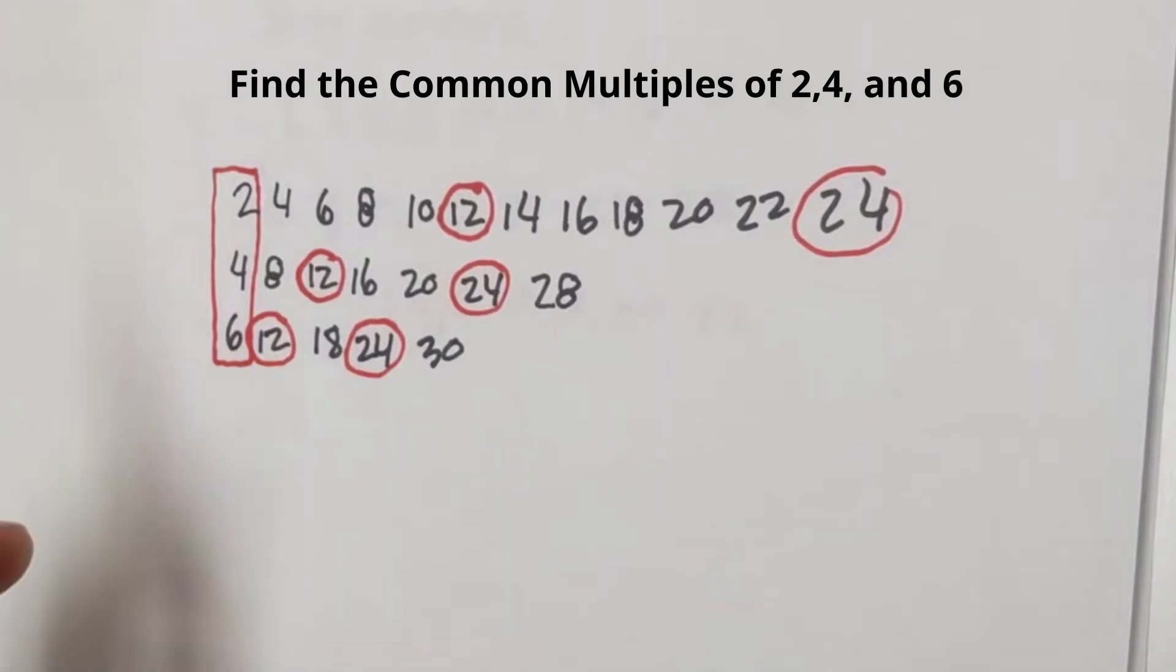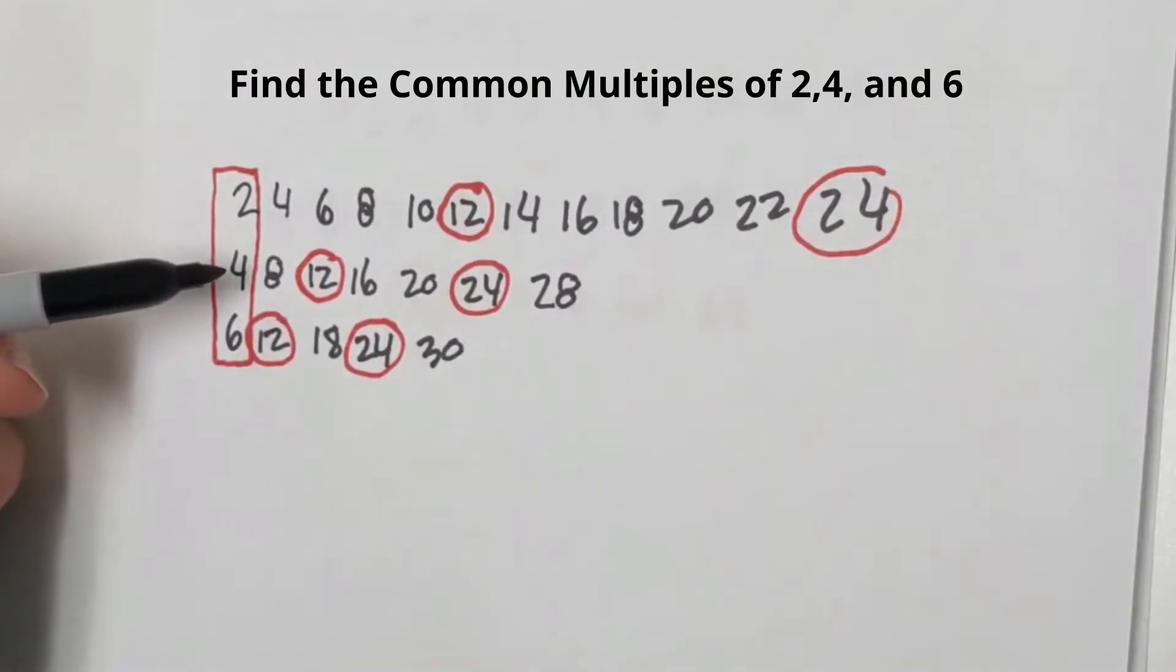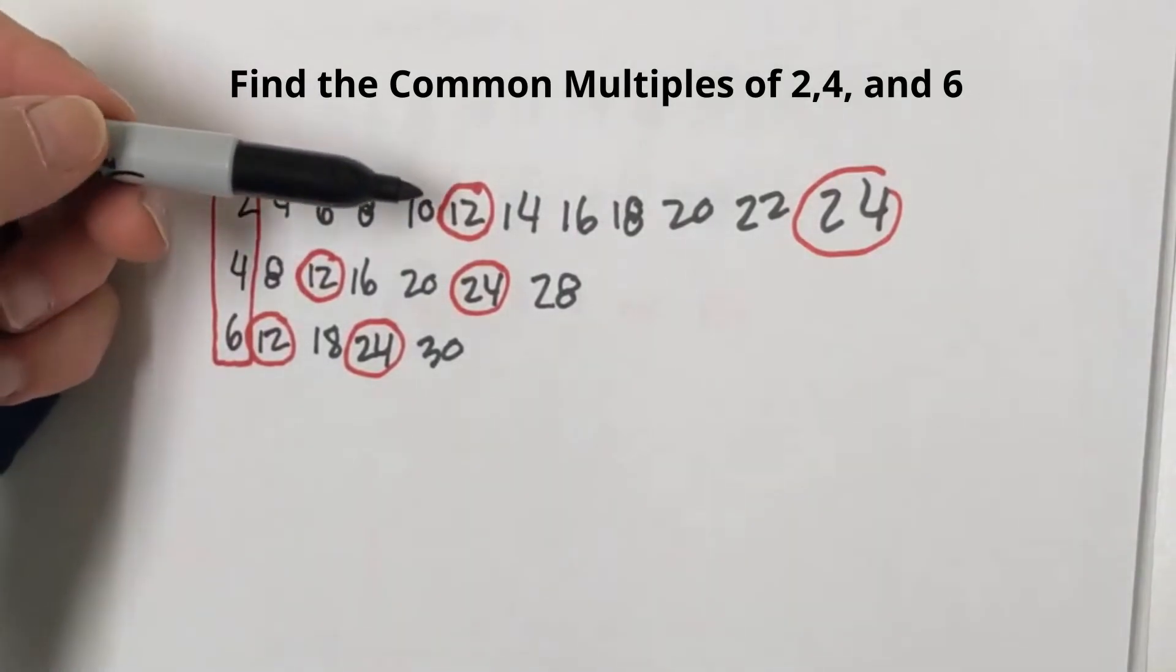Now say we add six, so we have the numbers two, four, six. And here are all the multiples of two: two, four, six, eight, ten, twelve. All the multiples of four, and all the multiples of six.